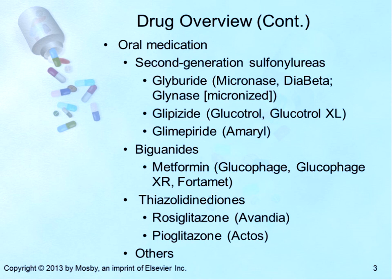Amylin is an endogenous peptide secreted in conjunction with insulin by the pancreatic beta cells. Pramlintide produces the same physiologic effects as amylin but is stable enough to be used as a medication. Amylin is known to suppress glucagon production especially in the postprandial state, reduce postprandial hepatic glucose production, delay gastric emptying time, centrally mediate induction of satiety, and reduce postprandial glucose levels. This medication is indicated for patients with type 1 diabetes and those with insulin-requiring type 2 diabetes.